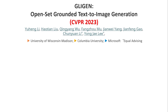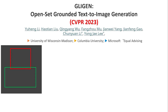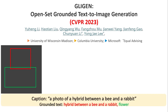In this video, I'd like to talk about the paper called GliGen: Open-Set Grounded Text-Image Generation from CVPR 2023. They propose a new type of diffusion model where you can have a grounding, like a bounding box, in addition to the text — for example, a photo of a hybrid between a bee and a rabbit — and force the diffusion model to generate an image with this constraint as the grounding.